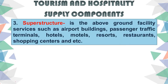The third supply component is superstructure — the above-ground facility services. Unlike infrastructure which is underground, superstructure refers to above-ground facilities such as airport buildings, passenger traffic terminals, hotels, motels, resorts, restaurants, and shopping centers. These are the places people visit for entertainment and relaxation. During the pandemic, visits to superstructures declined, but tourism is gradually reopening and these businesses should not remain stagnant.